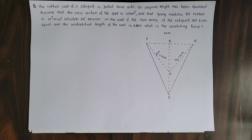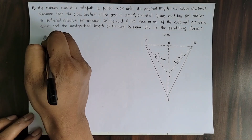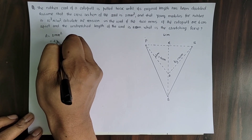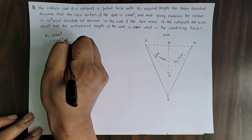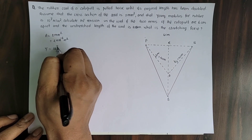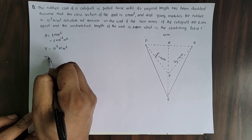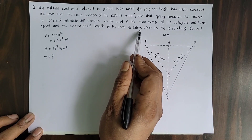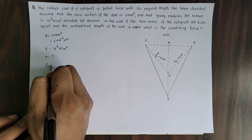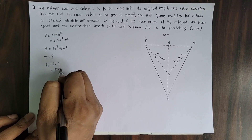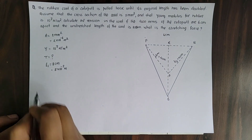Hello students. In this video, we have a problem from Class 11 elasticity. From the question: cross-section area of the cord A equals 2 mm², which is 2×10⁻⁶ m². Young's modulus for the rubber Y equals 10⁷ N/m². The unstressed length of the cord is 8 cm, equal to 8×10⁻² m. We need to find the tension T and the stretching force F.